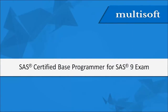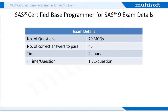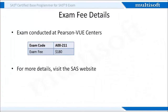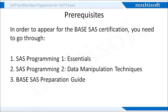Now that you understand what is covered in the books, I will cover the exam details for SaaS Certified Base Programmer for SaaS 9. You need to attempt 70 multiple-choice questions in the stipulated time of 2 hours. In order to pass, you need to answer at least 46 questions correctly, giving an average of 1.71 minutes per question. The exam is conducted worldwide in Pearson VUE centers with exam code A00-211. The fee to take the exam is $180. To appear for the base SaaS certification, you need to go through SaaS Programming 1 Essentials, SaaS Programming 2 Data Manipulation Techniques, and the Base SaaS Preparation Guide.